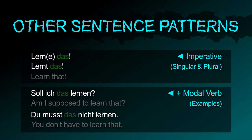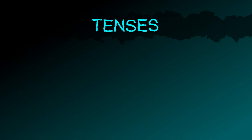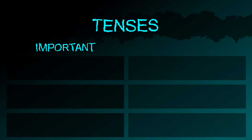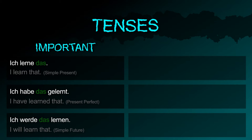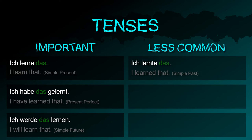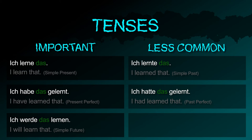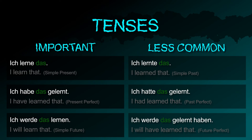Adding a modal verb: soll ich das lernen? Du musst das nicht lernen. Important tenses: ich lerne das (present); ich habe das gelernt (perfect); ich werde das lernen (future). Less common tenses: ich lernte das (preterite); ich hatte das gelernt (pluperfect); ich werde das gelernt haben (future perfect).